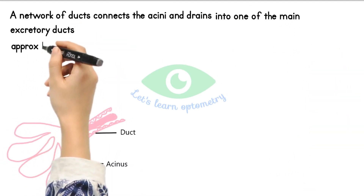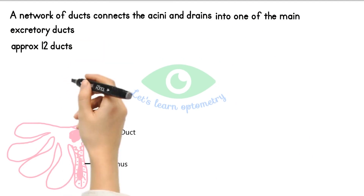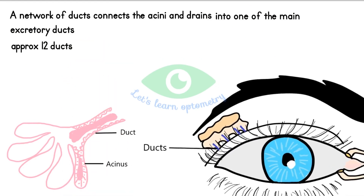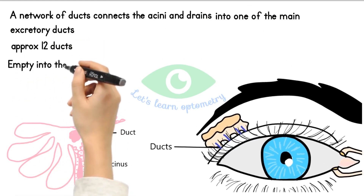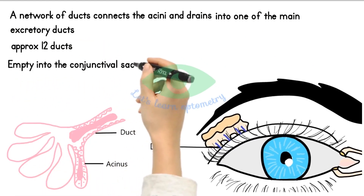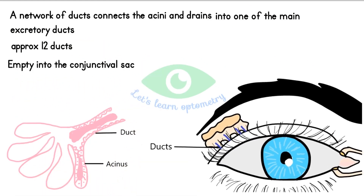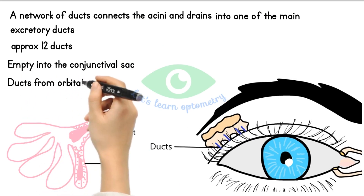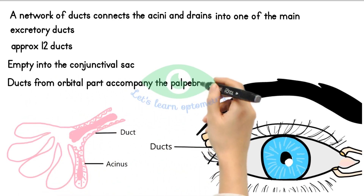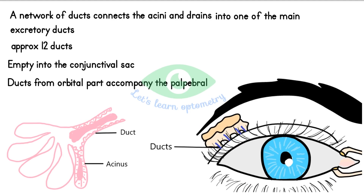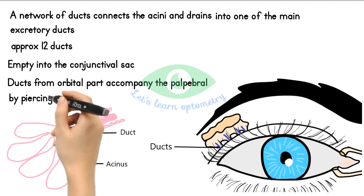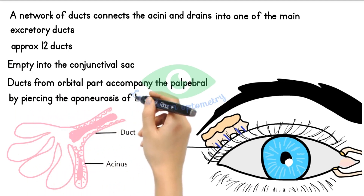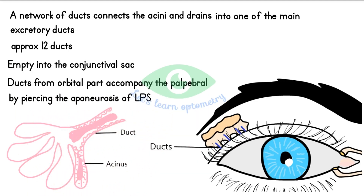There are approximately 12 of these ducts which empty into the conjunctival sac in the superior fornix. Ducts from the orbital part of the gland accompany those of the palpebral part by piercing through the levator palpebrae superioris aponeurosis.